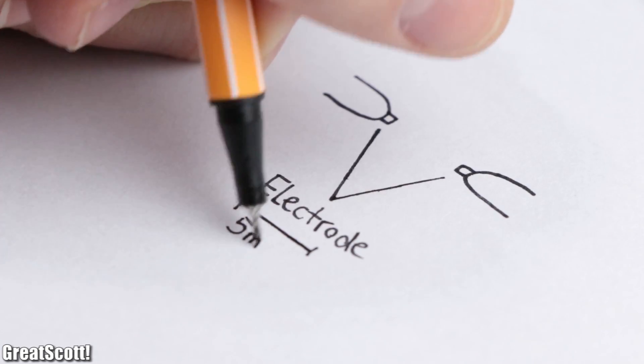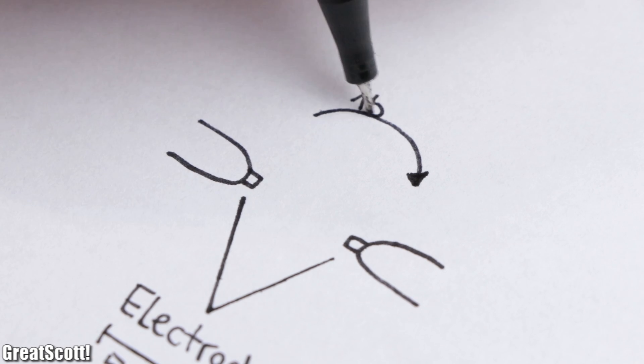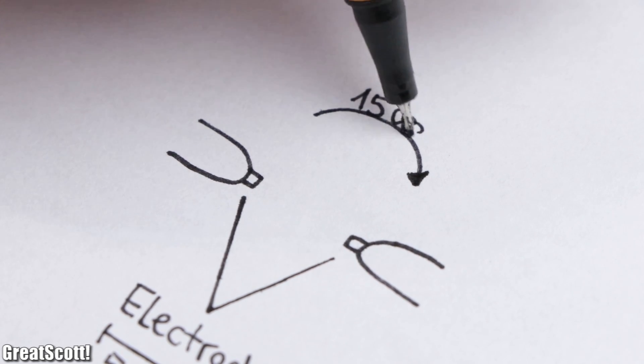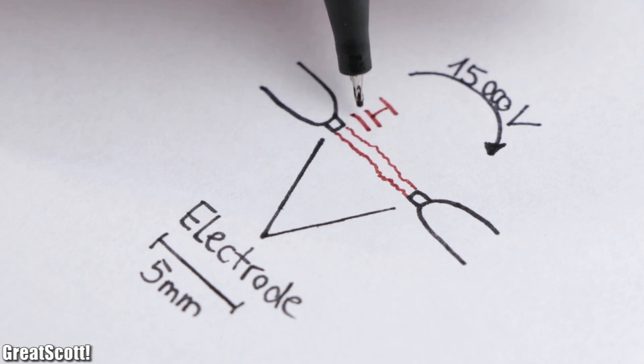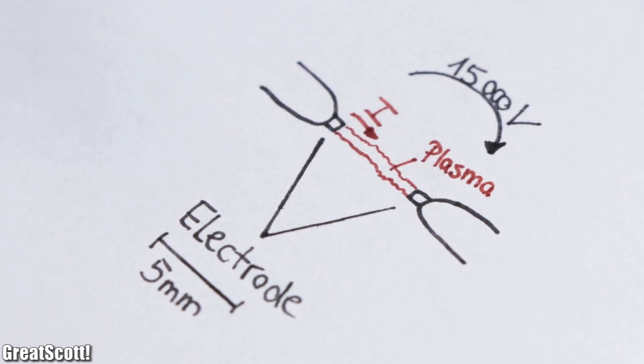If we look closely we can see that it basically consists of two electrodes with a distance of five millimeters that possess a high voltage difference of around 15,000 volts and thus create an electric arc, or easier put, a current path through the air that consists of plasma.